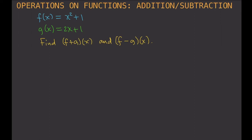So if you have two functions, you can perform operations between them just like with numbers. When you add two numbers you get another number — 5 plus 2 is 7. Same with functions: if you add two functions you get a new function. If you add f and g, the resulting function is f plus g. If you subtract g from f, the resulting function is f minus g.